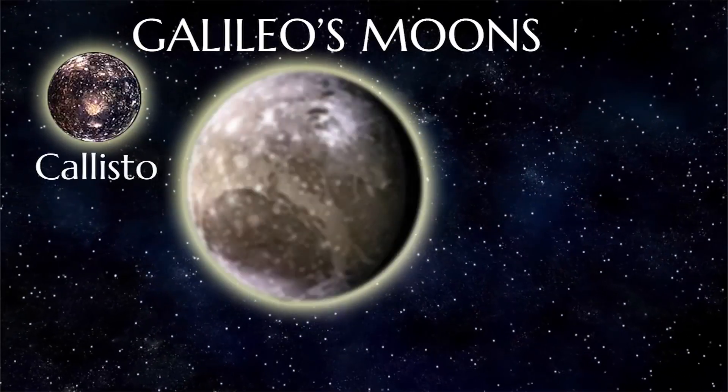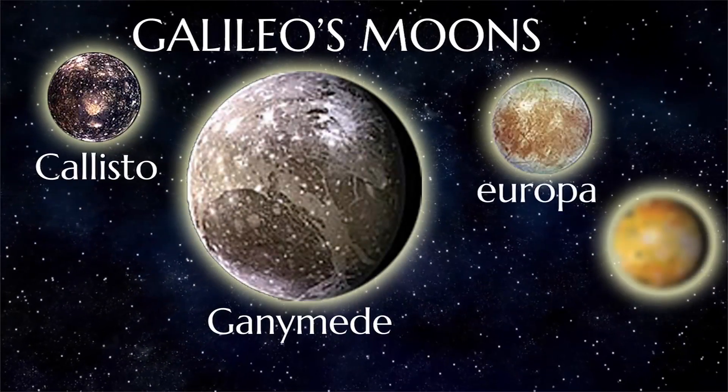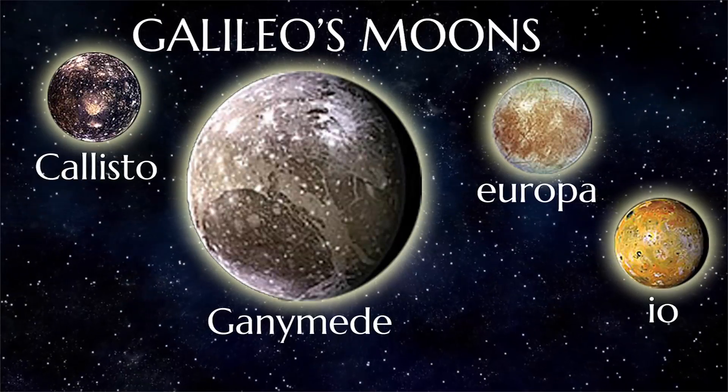Galileo was the first to discover the four moons in Jupiter, and they are named Galileo's moons.